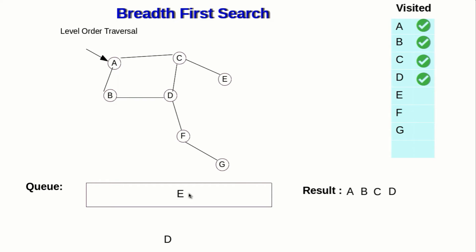Next, dequeue D. D has three neighbors: B, C, and F. B and C are already visited, so enqueue only F. Dequeue E; E has no unvisited neighbors. Dequeue F; F has neighbors D and G — D is already visited, so enqueue G. Finally, dequeue G; G has no unvisited neighbors. The queue is now empty, and we are done.